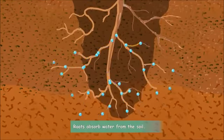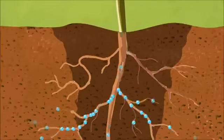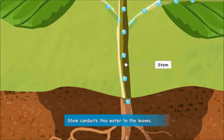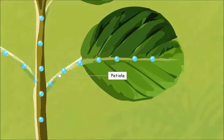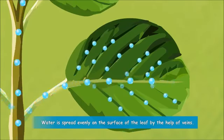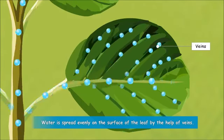Water from the soil is absorbed by the roots of the plant. From roots, water travels through the stem to the petiole and then to the leaves. The water is distributed to the entire surface of leaves by the veins.